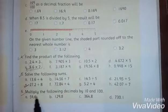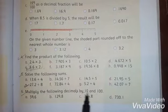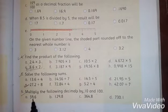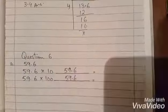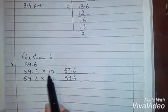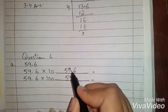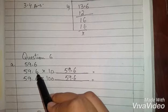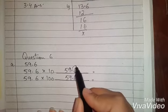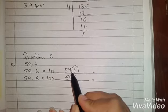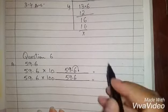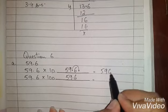Now see, question number 6. Multiply the following decimals by 10 and 100. We have to multiply this with 100 and 10. Now see, we will multiply 10 with 59.6. We will multiply 10 with 59.6 as it is. This is the point here.